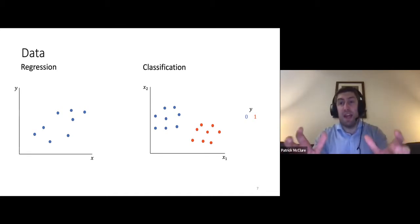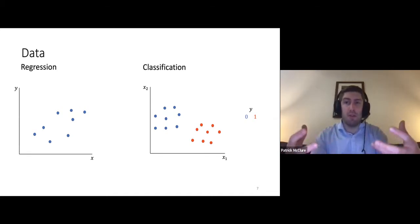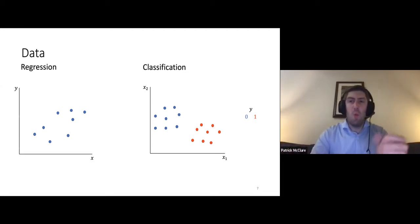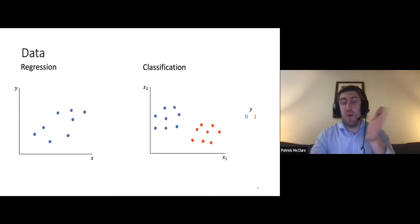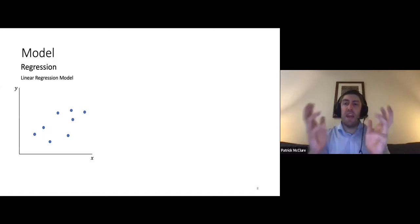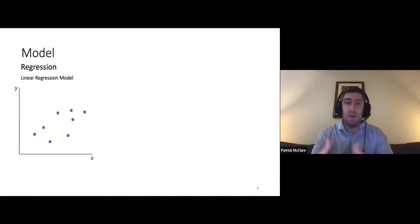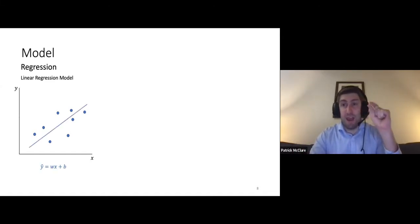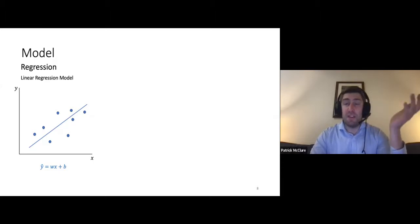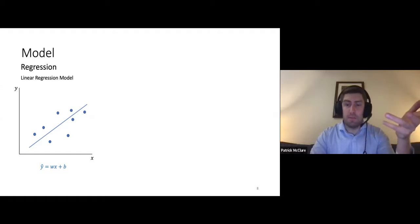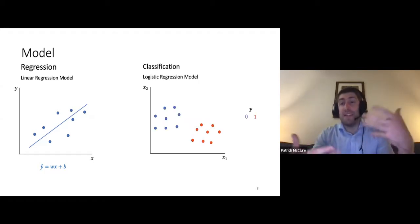Now that we have an idea of what kind of data we might have and the problems associated with it, we want to define a model that transforms our input to an output. In the case of regression, one of the simplest models is linear regression, where you fit a line that takes x as input, multiplies it by a weight, and adds a bias b. For classification in this simple case, the model often used is logistic regression, whose goal is to find a line that separates the two classes.